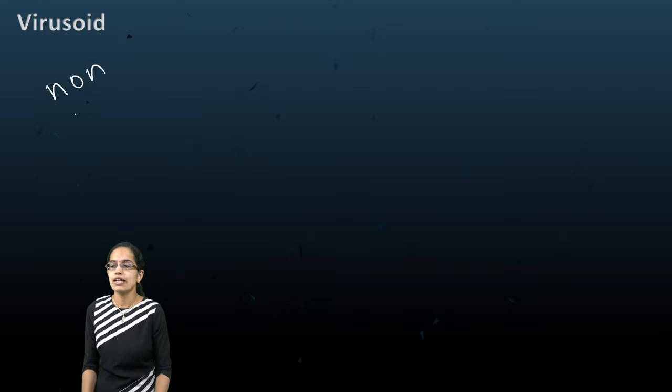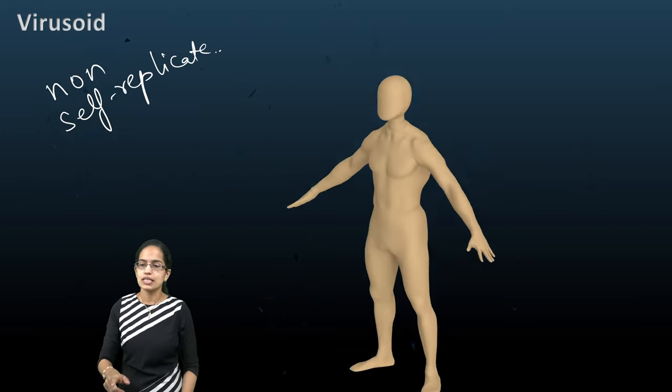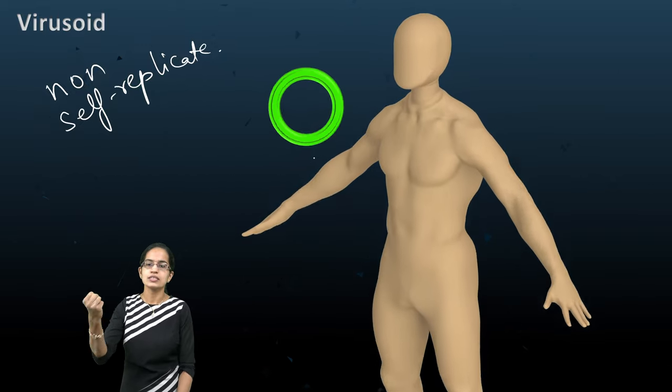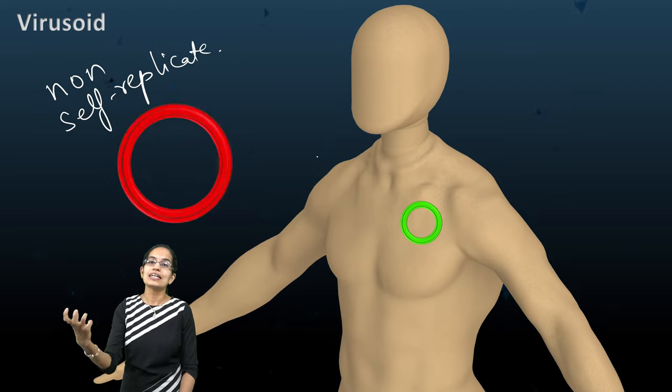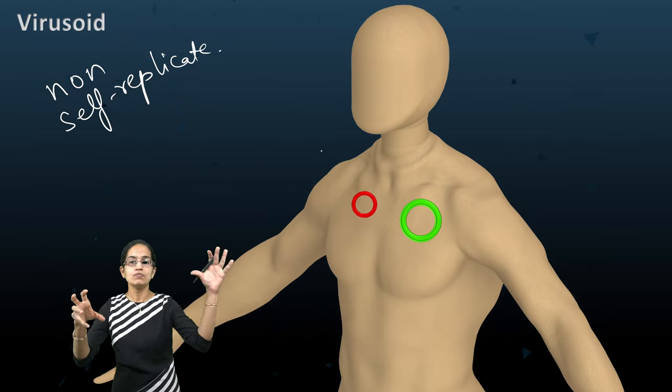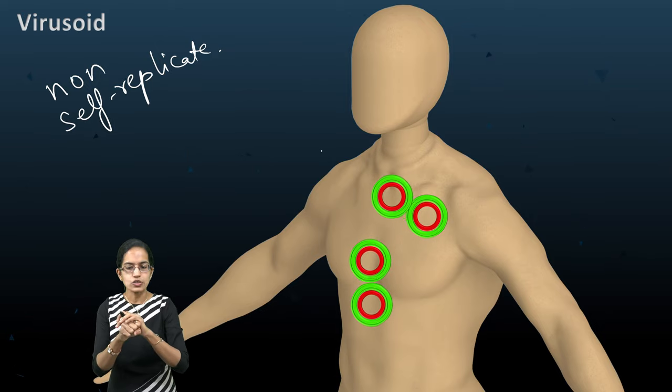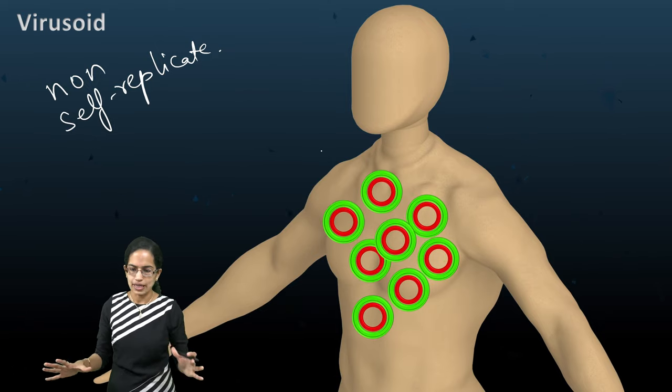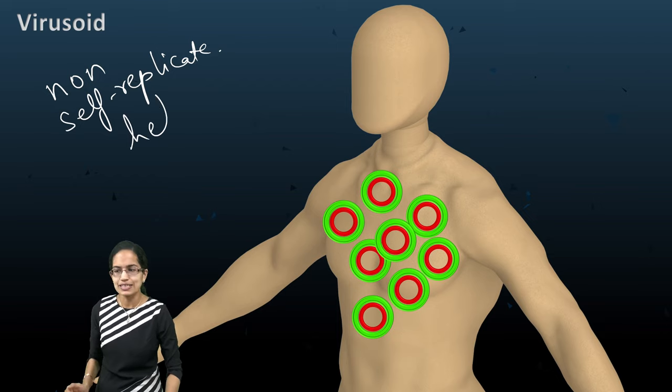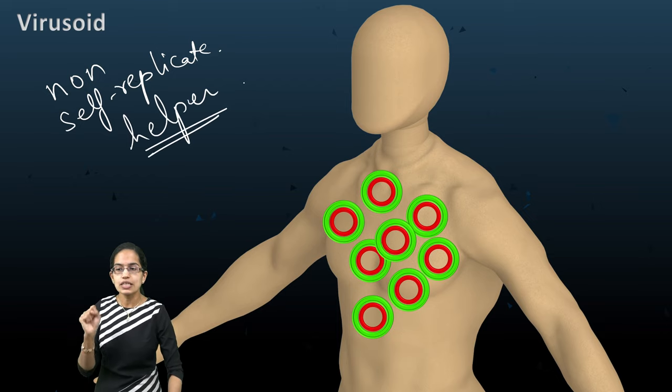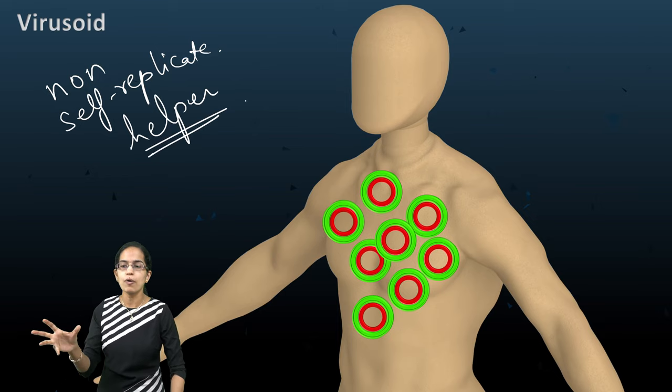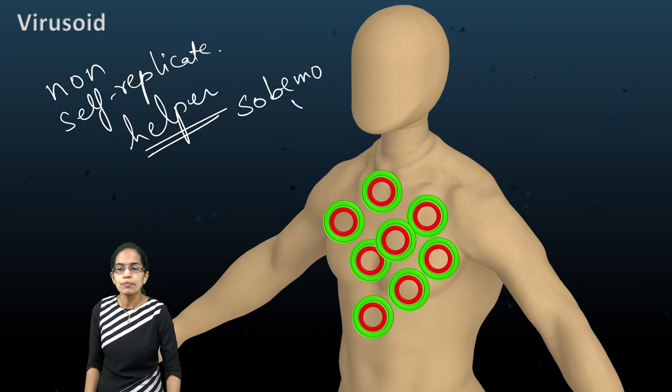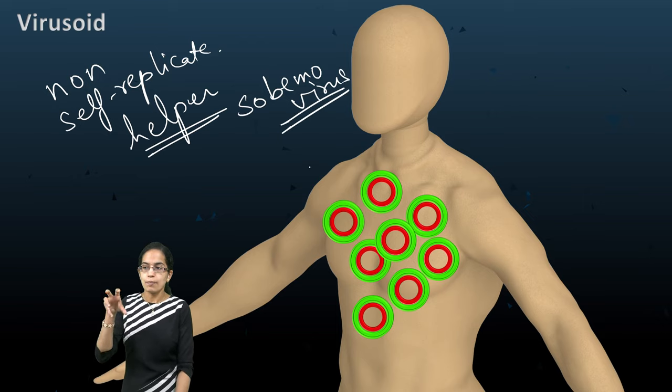The next is virusoids. Virusoids are non-self-replicating. What does that mean? They require a helper cell to replicate. As we see here, there is a virusoid that enters. Once the virusoid enters, if there is a helper cell that enters, the helper cell binds with the virusoid and it starts to replicate. With the help of the helper cells, it can multiply. Now, these helper viruses belong to a group of family of viruses which are known as sobevo viruses.